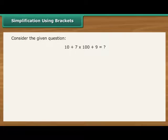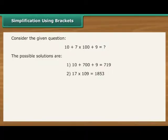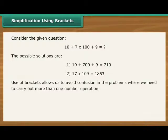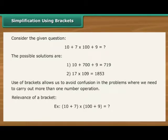Simplification using brackets. Consider the given question. This question can be solved in two ways. Which is the correct answer? Use of brackets allows us to avoid confusion in problems where we need to carry out more than one number operation. Let us see how. If the question would be given as shown on screen, it would be easy to calculate. Yes. The answer would be as 17 into 109 is equal to 1853.